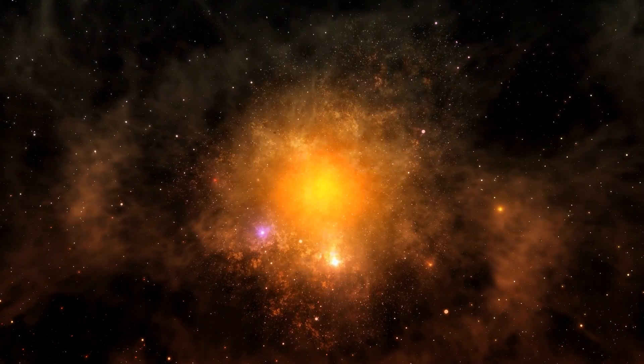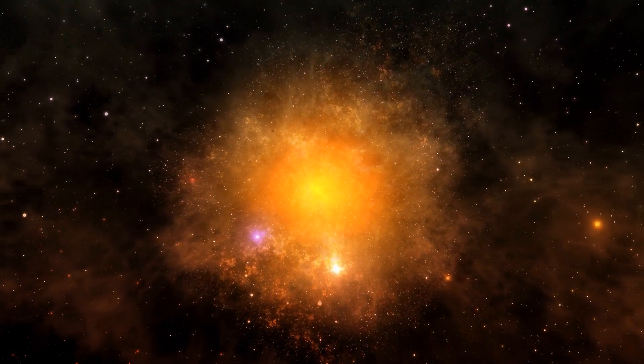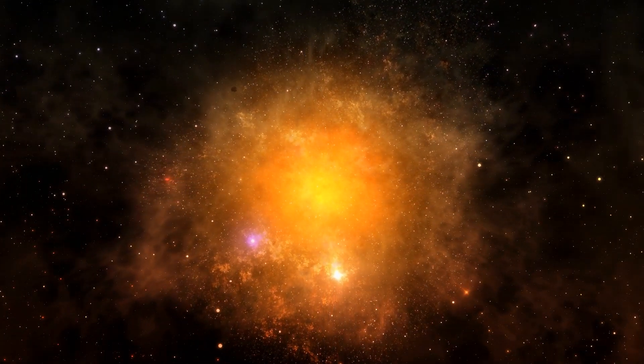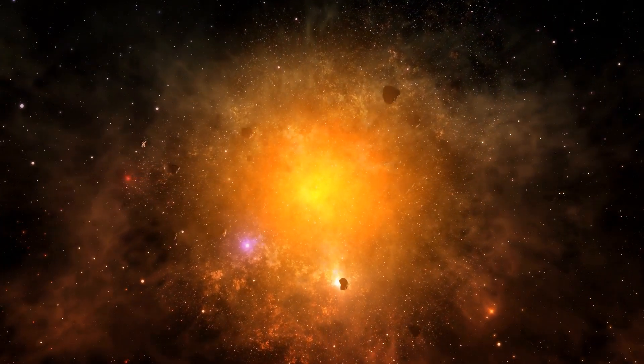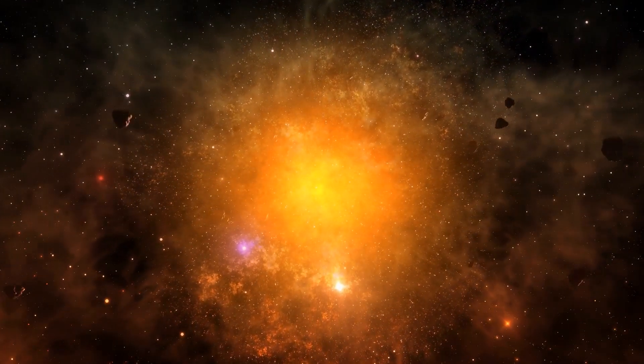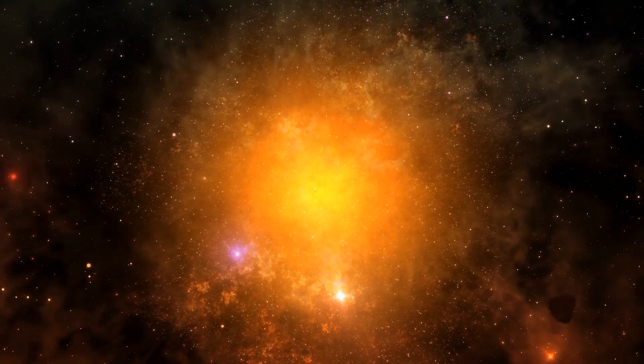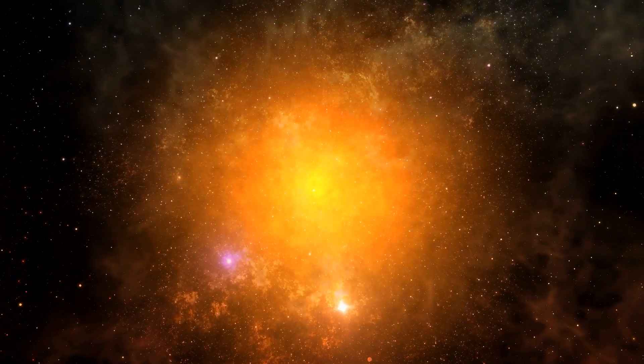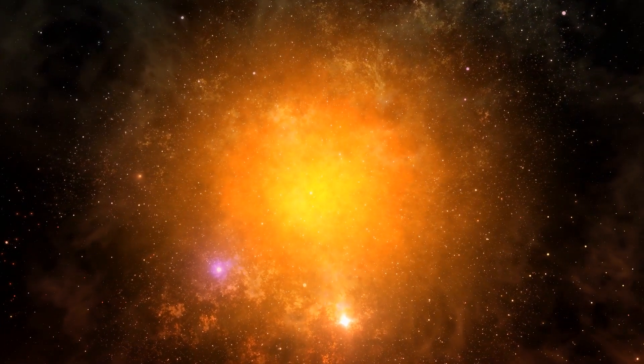From this supernova, the universe entered the state it is in today, including all of our laws of physics, and began to expand. 13.8 billion years later, and the universe continues this expansion. The big crunch theory states that this expansion will actually one day come to an end. Once it expands and reaches a certain average density, the process will halt and effectively cause the universe to contract back in on itself.